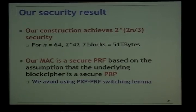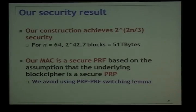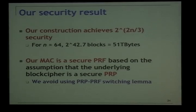Our security result: our construction achieves not 2^n but 2^(2n/3) security. For 64-bit block ciphers, this corresponds to 42.7-bit security, which corresponds to 51 terabytes — a significant gain. Our MAC can be proven to be a secure PRF based solely on the assumption that the underlying block cipher is a secure pseudorandom permutation, so we don't use the switching lemma in our proofs.